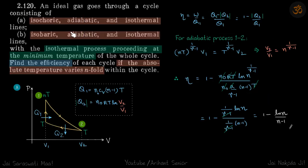So this is how we represent the processes. We need to find the efficiency of each cycle if the absolute temperature varies n-fold. So if the temperature here is T, the temperature here is going to be n times T.